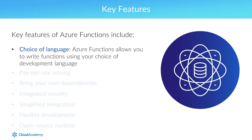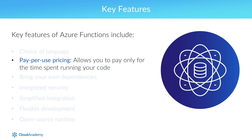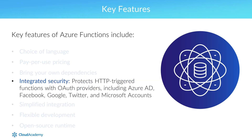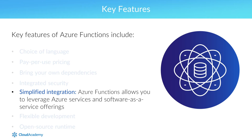Azure Functions allows you to write functions using your choice of development language. The pay-per-use pricing model means you pay only for the time spent running your code. Because Azure Functions supports NuGet and NPM, you can use your favorite libraries or bring your own dependencies. The integrated security of Azure Functions protects HTTP-triggered functions with OAuth providers including Azure AD, Facebook, Google, Twitter, and Microsoft accounts. The simplified integration allows you to leverage Azure services as well as software-as-a-service offerings.